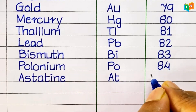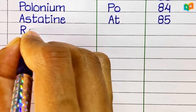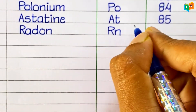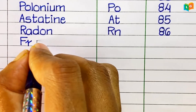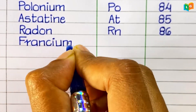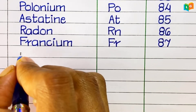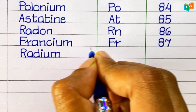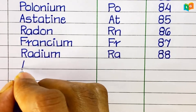Astatine, symbol At, atomic number 85. Radon, symbol Rn, atomic number 86. Francium, symbol Fr, atomic number 87. Radium, symbol Ra, atomic number 88.